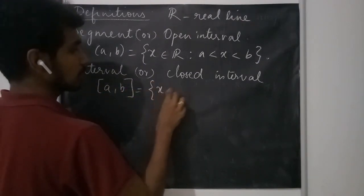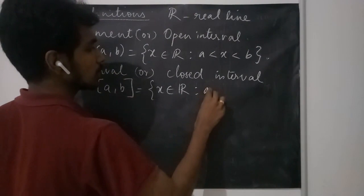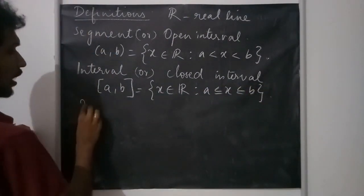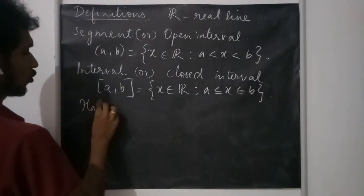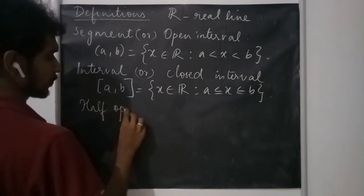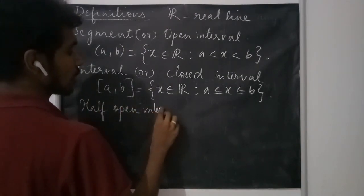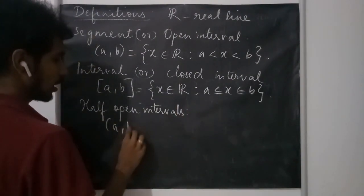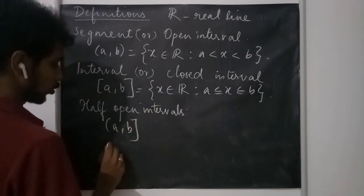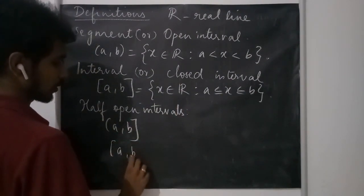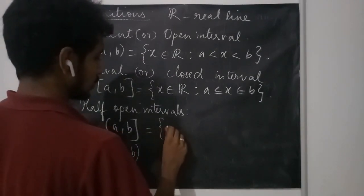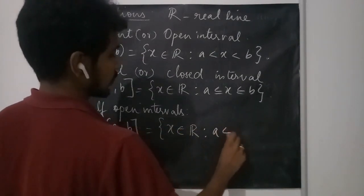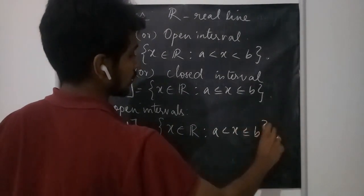Then we have half-open intervals. They can be either left-open or right-open, and they consider the real numbers satisfying their respective conditions.